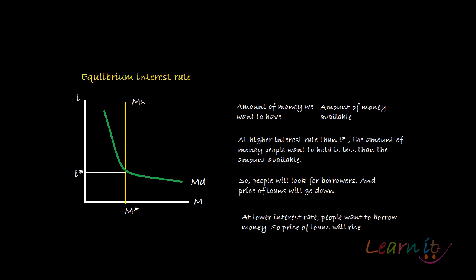Equilibrium interest rate — how is it determined? We already know that there exists a downward sloping demand curve for money, for reasons spelled out earlier, and we have a perfectly inelastic supply curve for money. Their intersection at this point determines the equilibrium interest rate and equilibrium supply and demand for money.